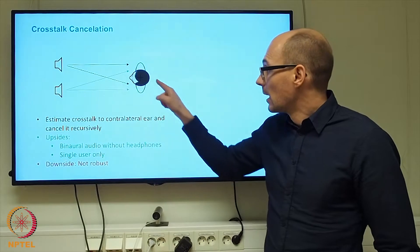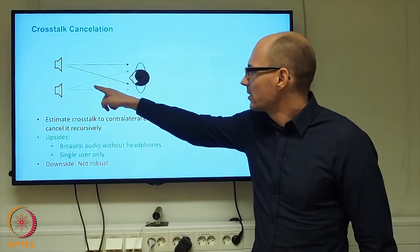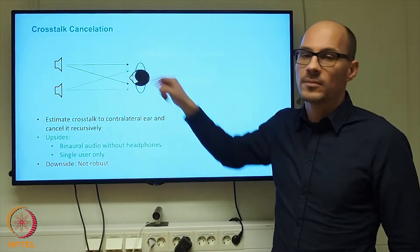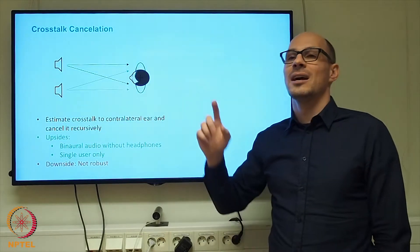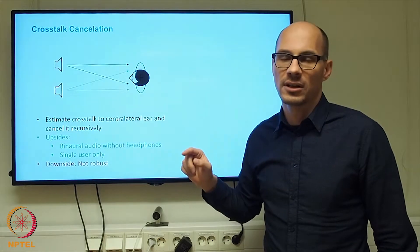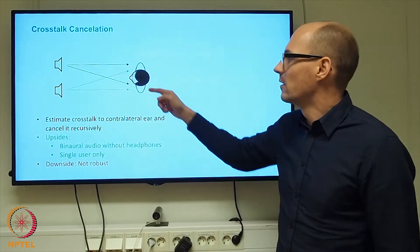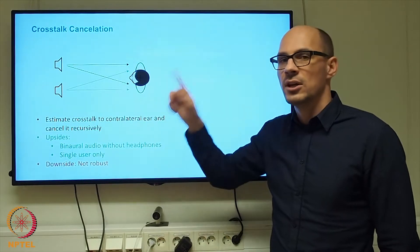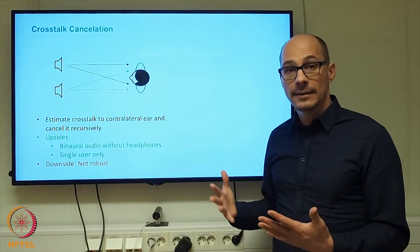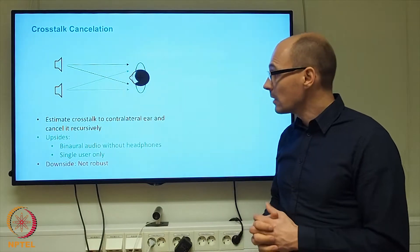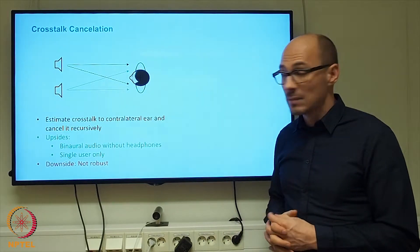In the ideal case, the crosstalk and the cancellation signal perfectly cancel each other at the contralateral ear. But unfortunately, the cancellation signal also produces crosstalk to the other ear, so you need to cancel that as well. This leads to an infinite recursion, but fortunately it converges so that you eventually arrive at a stable solution.